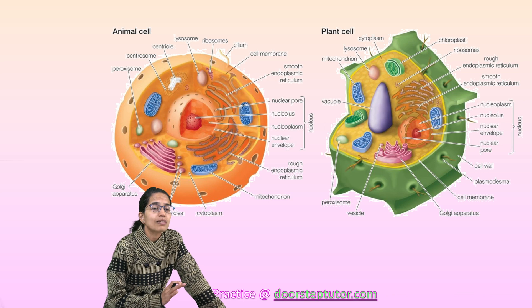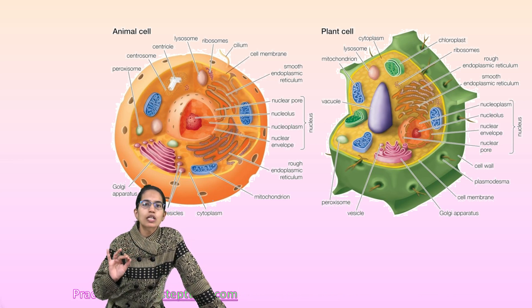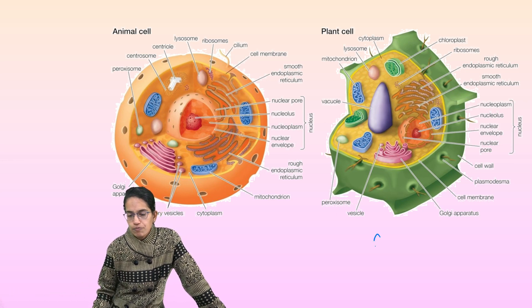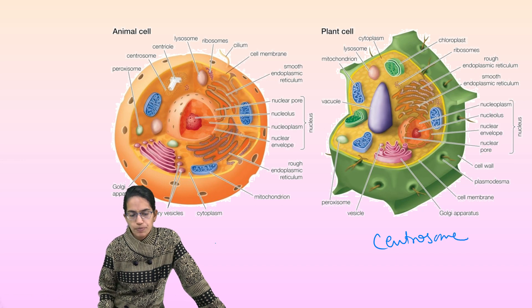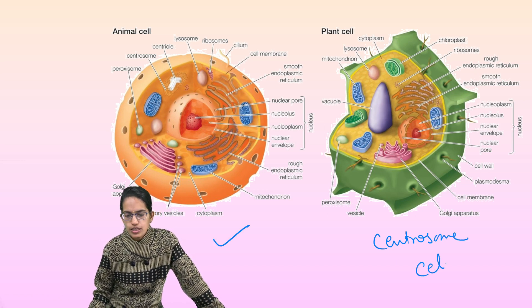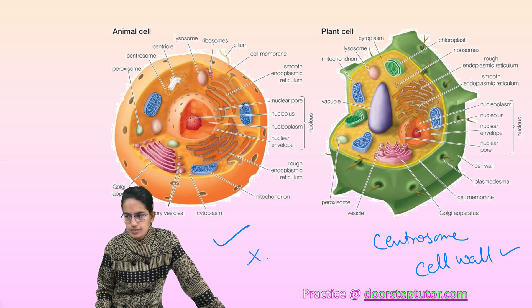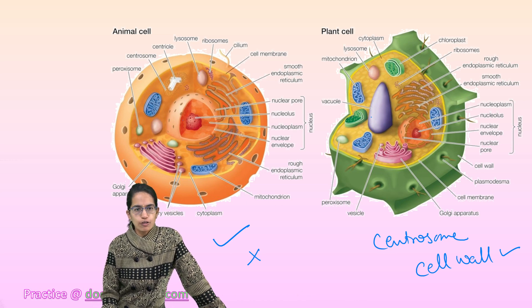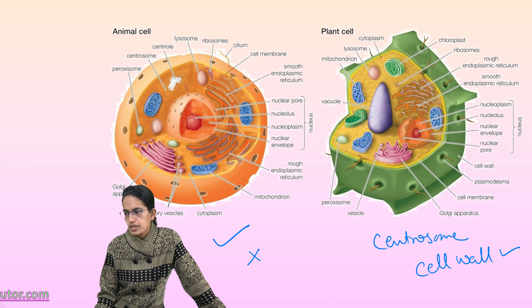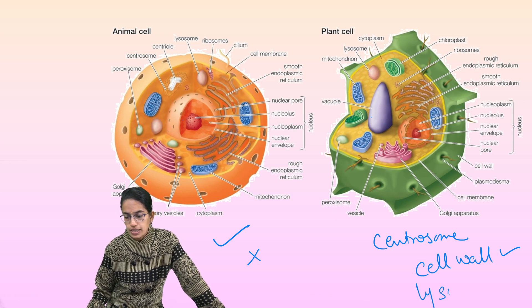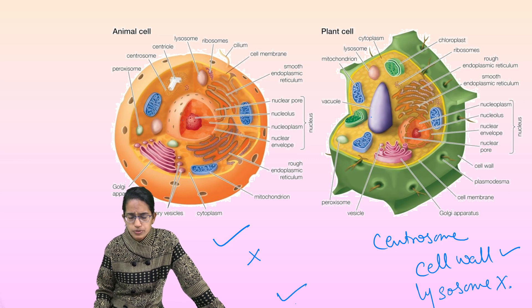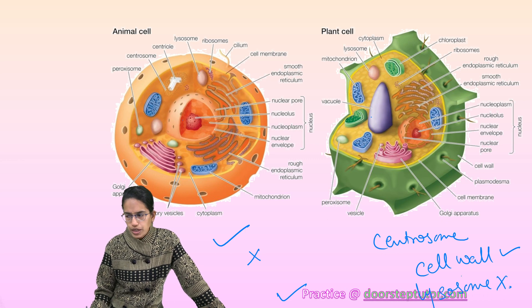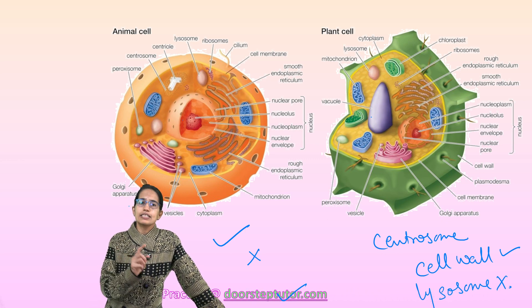Coming to the differences between animal cell and plant cell, before we discuss individual cell organelles: plant cells have a cell wall; centrosomes are absent in plant cells but present in animal cells; cell wall is present in plant cells but absent in animal cells; there is a large vacuole in plant cells while animal cells have small vacuoles; lysosome is absent in plant cells but present in animal cells; food is stored as starch in plant cells but as glycogen in animal cells.